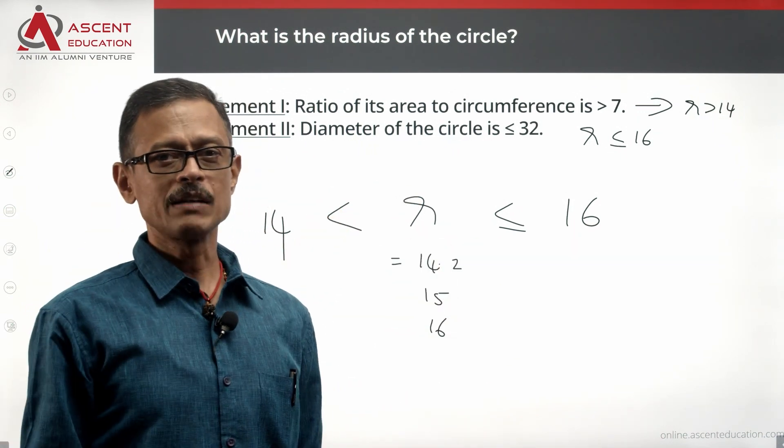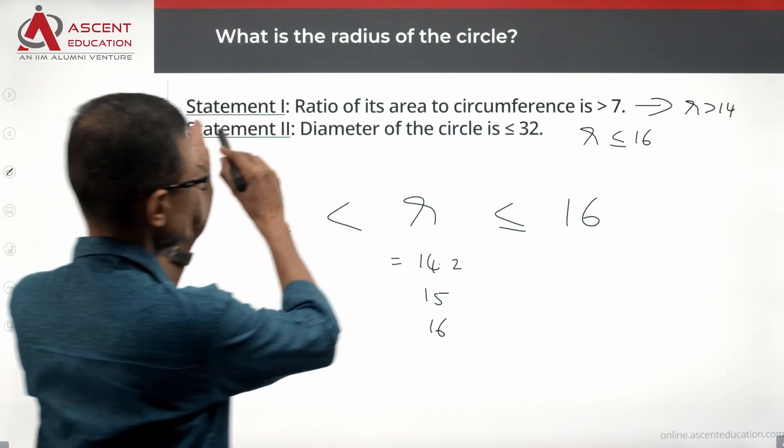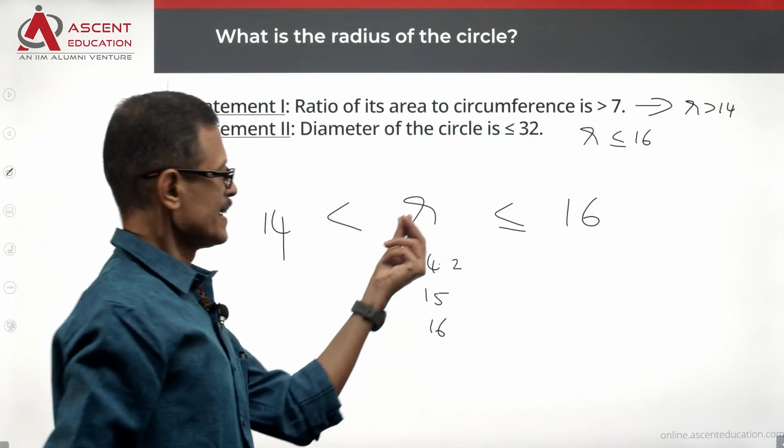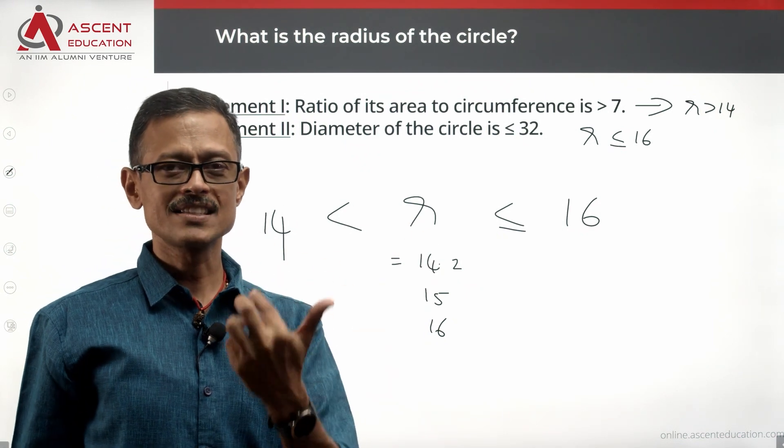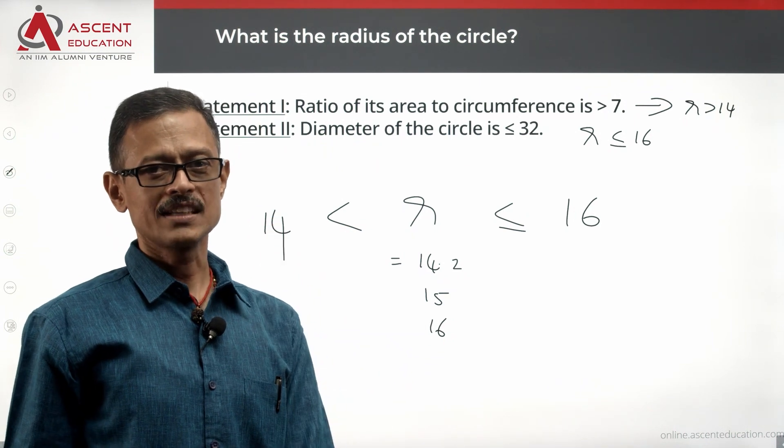Two statements combined, we have not been able to find a unique value for R. This is the key to the problem. If we see greater than 14, less than 16, we might assume 15 as a value for R. That is the trap in this question. C is not the answer.